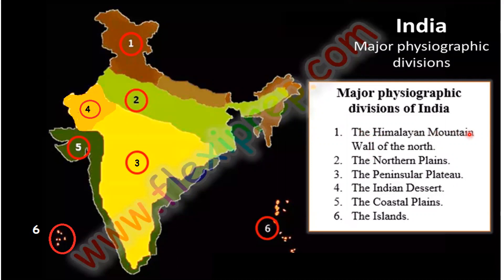The six physiographic divisions are: the Himalayan mountain wall of the north, or the great northern mountains; the northern plains; the peninsula plateau; the Indian desert; the coastal plains; and the islands. This area fully constitutes the northern mountains, and this is the northern plains, the peninsula plateau, the Indian desert called as Thar desert, the coastal plains, and the islands.